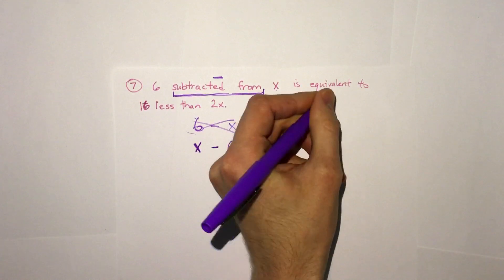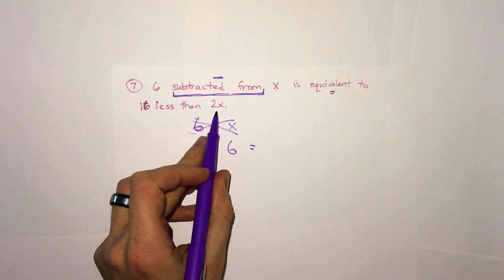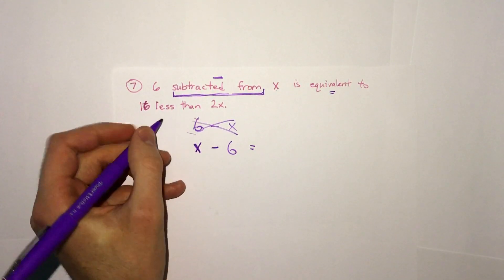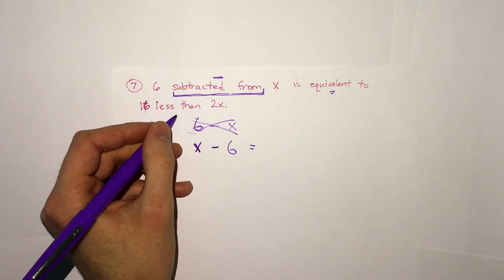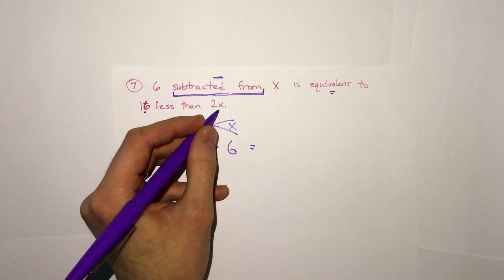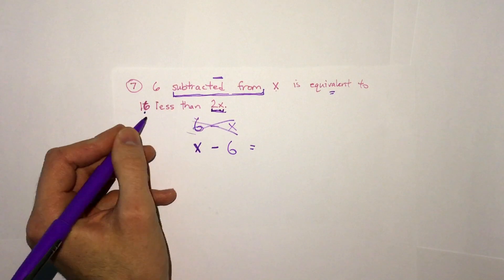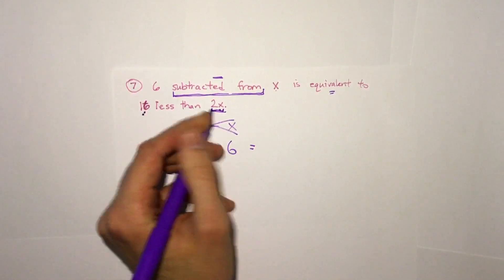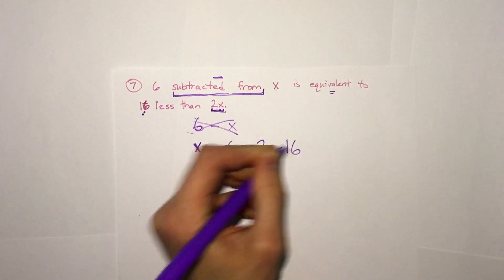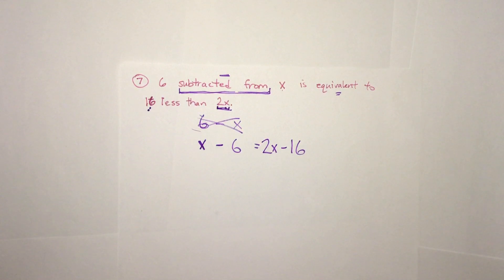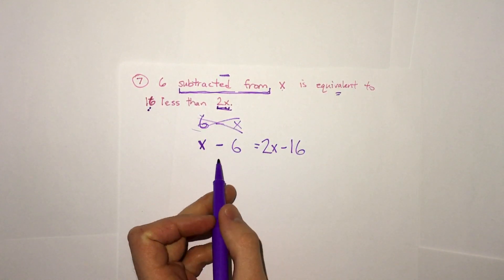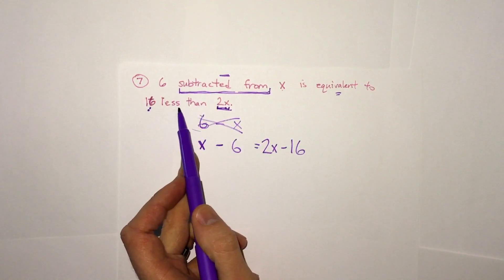And that's equivalent to equals 16 less than 2x. If we're talking about 16 less than 2x. Again, think about if we take, what this is literally saying is we're taking a 2x and making it 16 smaller. So it's not 16 minus 2x, but 2x minus 16. So you want to be careful with that subtraction language because it can be tricky to think about which order we subtract things. But order does matter with subtraction. So we do have to pay attention to which is minusing which.